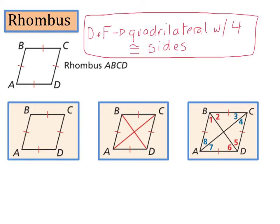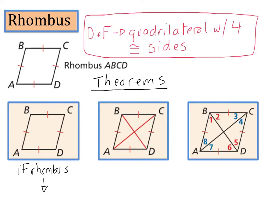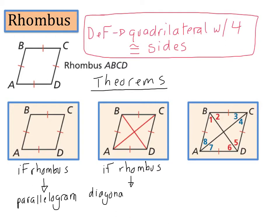There are three theorems I want to discuss about a rhombus. The first theorem says that if we have a rhombus, then that rhombus is a parallelogram — so all the properties of parallelograms apply to a rhombus. The second theorem: if we have a rhombus, we know that the diagonals are perpendicular. Each diagonal makes a 90-degree angle with the other.